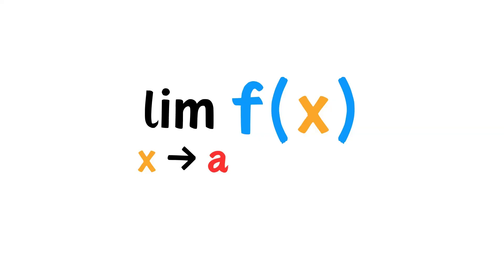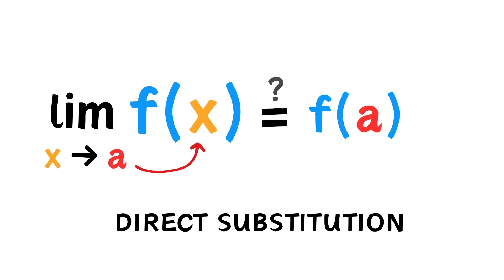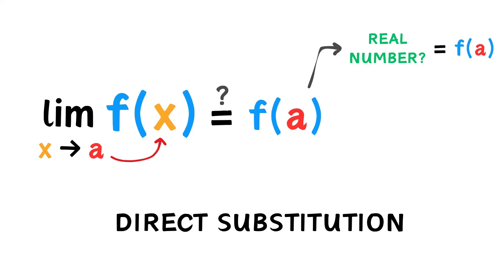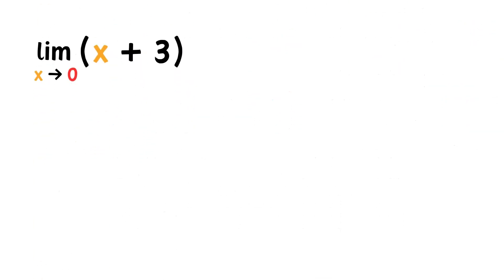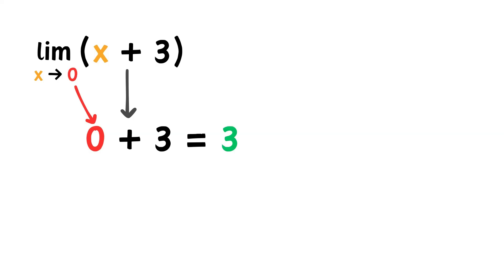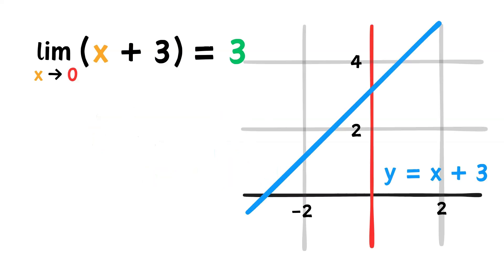Now, let's evaluate limits without a graph or table. When all we have is a limit, the first step is direct substitution into the function. The output will tell us about the limit. If the result of the direct substitution is a real number, then that's the limit. If it is a number over 0, then the limit either does not exist or is unbounded. And if the result is the indeterminate form 0 over 0, that tells us that we can try to manipulate the equation and hopefully find the limit. For example, let's find the limit of x plus 3 as x approaches 0. Directly substituting 0 into x plus 3, we get 0 plus 3, which is 3. 3 is a real number, so that's our limit. Looking at the graph of x plus 3, as x approaches 0, the function indeed approaches 3.